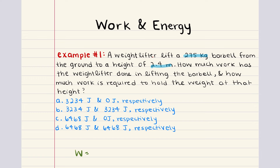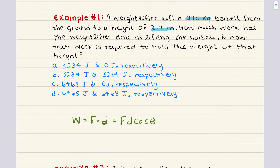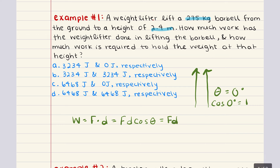Mathematically, work is equal to the dot product between force and displacement, and this expands into force multiplied by displacement multiplied by cosine theta, where theta is the angle between the force and the direction of displacement. Now since the barbell is lifted vertically, the force exerted by the weightlifter is directly upward, parallel to the displacement, and that makes theta equal to 0 degrees. Cosine of 0 degrees equals 1, so we can simplify this equation to just force multiplied by displacement.